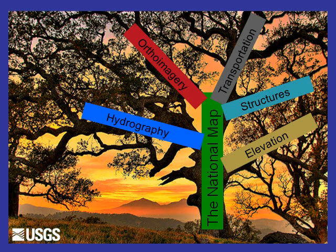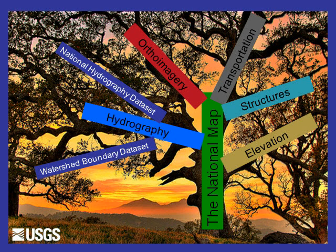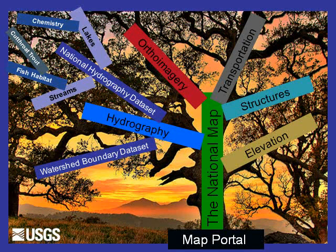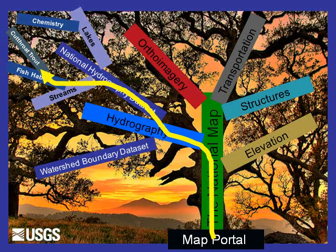In hydrography, we have the National Hydrography Dataset and the Watershed Boundary Dataset components that make up the hydrography theme of the National Map. In the National Hydrography Dataset, we have things like lakes and streams. Connected to lakes might be information on the water chemistry of the lake. Connected to streams, we might have information on fish habitat, such as cutthroat trout in a stream. We can access this information through a map portal, which allows us to enter into this geographic information system.